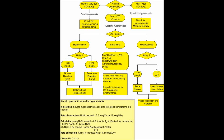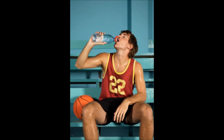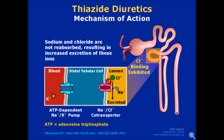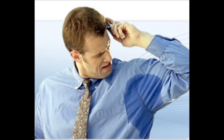Hyponatremia is classified as sodium less than 135. The causes of hyponatremia include excessive water intake, SIADH (syndrome of inappropriate antidiuretic hormone), water intake without sodium, excessive sodium loss, diuretics, GI losses like diarrhea, and diaphoresis.